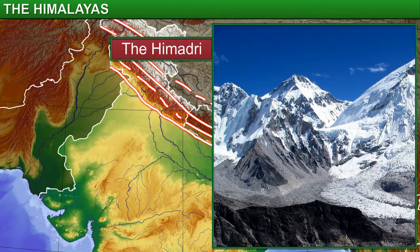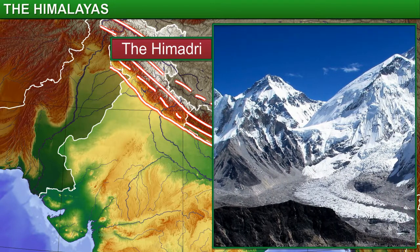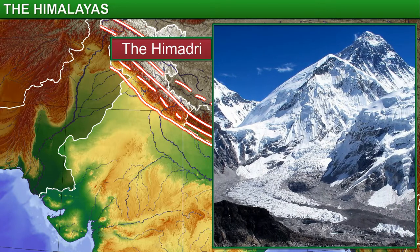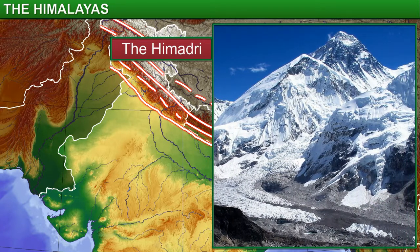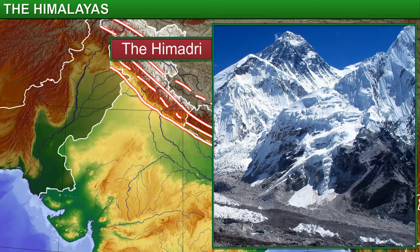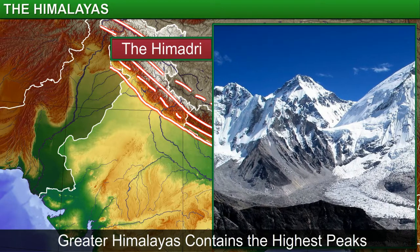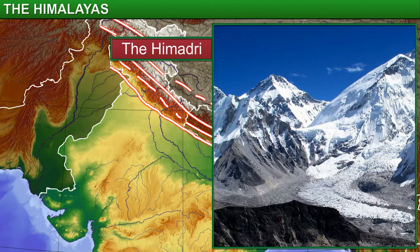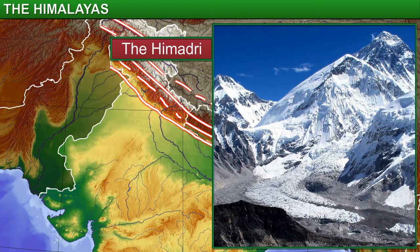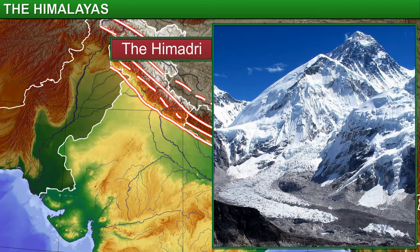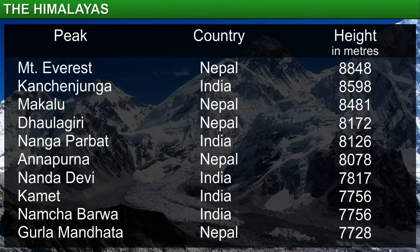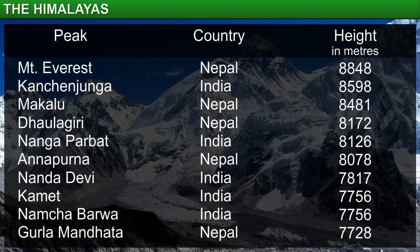The Himadri is the northernmost range of the Himalayas. This range is in a single, unbroken line and has the highest peaks. Considering that the average height of peaks in the Himadri is 6,000 meters, it is not surprising that the important peaks of the Himalayas are located in this range.